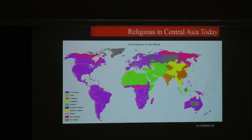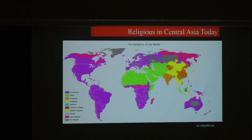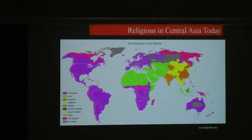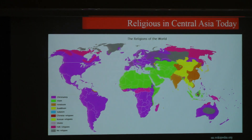Moving away from language and thinking about religion in Central Asia: this map is instructive even if monolithic, showing majority religions by area. Most of Central Asia outside of Mongolia and Tibet is Muslim today — Afghanistan, the five former Soviet republics, and Xinjiang province have majority Muslim populations.